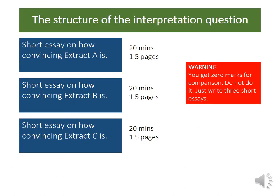Let's talk about the structure of this interpretation question, because it is odd — genuinely a bit weird. You've got an hour to do this question and it's 30 marks, but in reality the best way of thinking about it is it's three short essays: a short essay on how convincing extract A is, one on extract B, and one on extract C. Each one is going to be 20 minutes and about a page and a half. What's weird is you get zero marks for comparison. Nowhere should you be writing 'extract A is better than B' or 'C is the weakest.' You need to see this as three mini essays in one question.